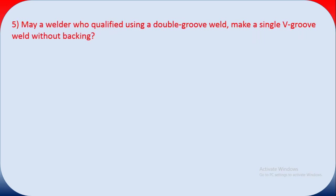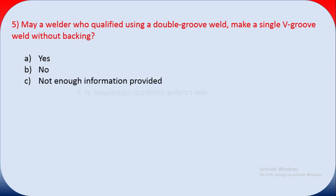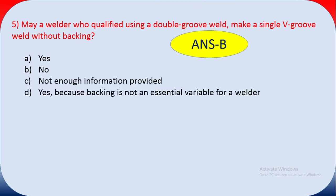Question five: may a welder qualified using a double groove weld make a single groove weld without backing? No, you cannot. The welder is qualified with a double groove, and joint design is an essential variable. The answer is B — no.